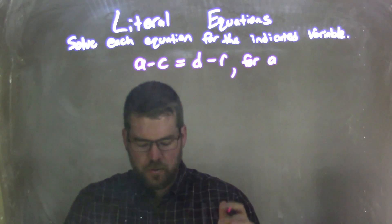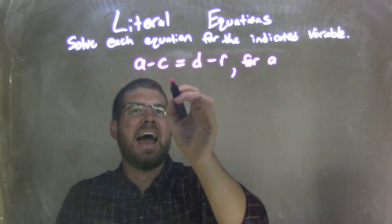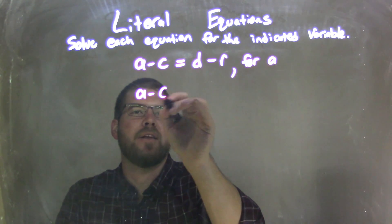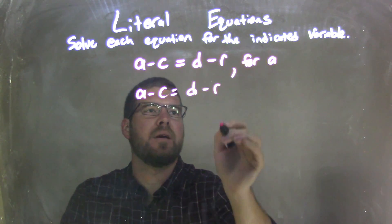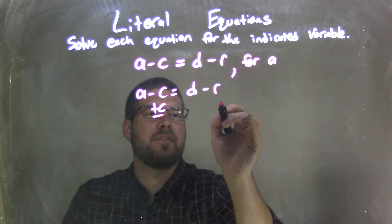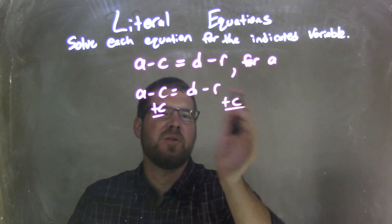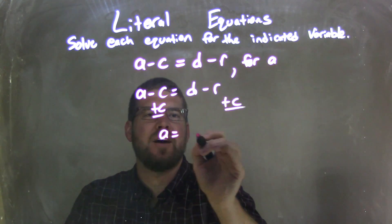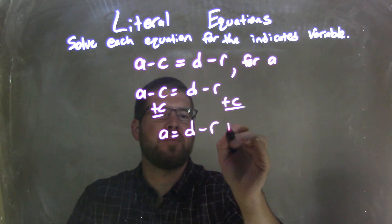How can I get A by itself? So what I need to do is rewrite my equation: A minus C equals D minus R. I'm going to solve it for A. So to get A by itself, I'm going to add C to both sides. Well, there's no like terms here, so we're left with A by itself equals D minus R plus C.